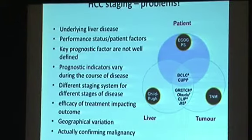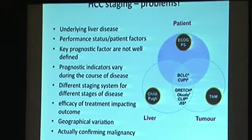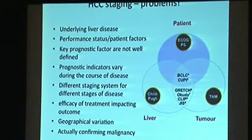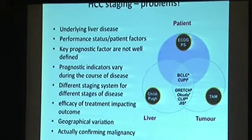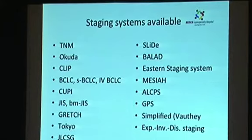Disease from different geographical regions tends to have a different course, resulting in different outcomes. Finally, there is the problem of how to confirm malignancy. We have good radiological criteria to identify tumors more than 2 cm, but for tumors less than 2 cm or less than 1 cm, confirming malignancy becomes difficult because histopathological examination may not always be feasible. This results in a number of staging modalities, none of which are very well accepted.